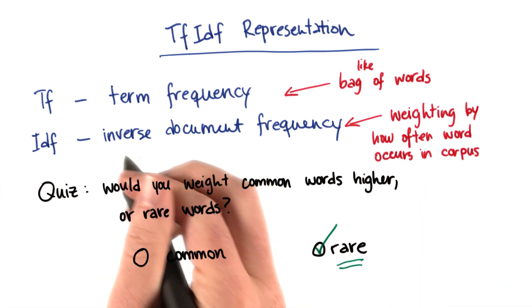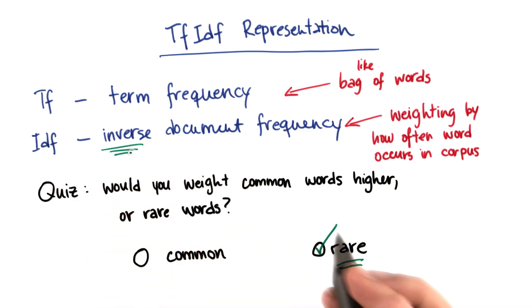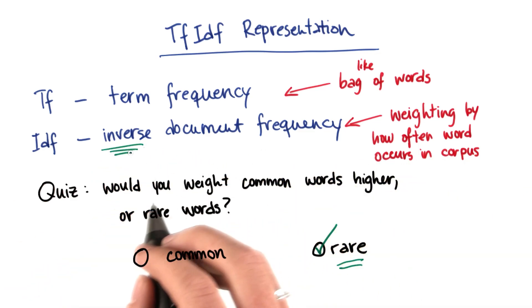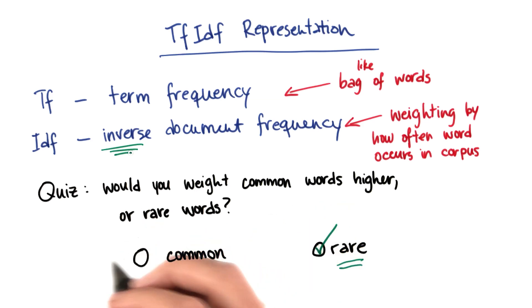And so another way to think about that is that this is why it's called the inverse document frequency, that you want to weight the words by the inverse of how often they appear in the corpus as a whole.